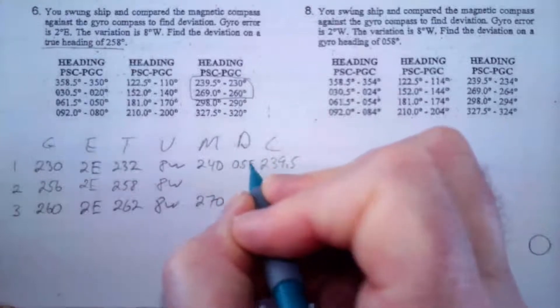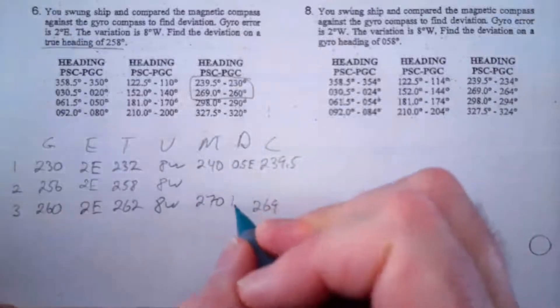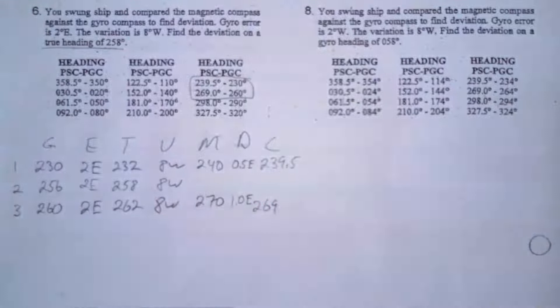So my deviation between these two is 0.5, that's 0.5 east. And the difference between these two is 1.0 and it got smaller, so that's east as well.